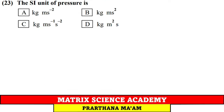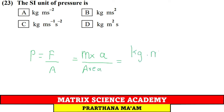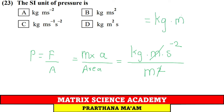What is the SI unit of pressure? Pressure = force/area = (mass × acceleration) / area = kg × m/s² / m² = kg·m⁻¹·s⁻². Option C.